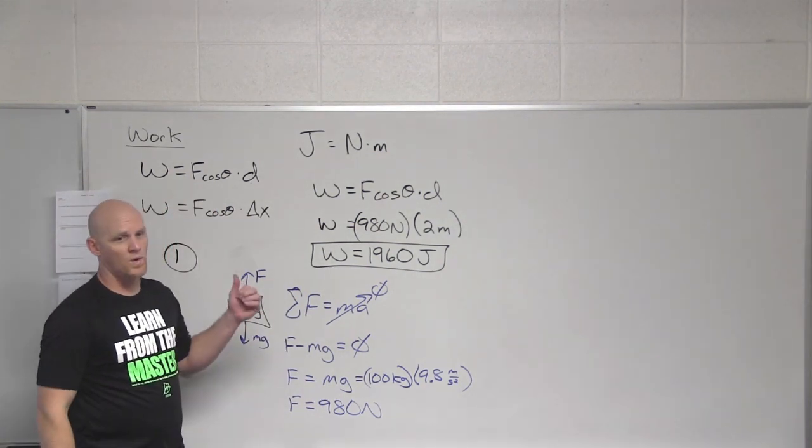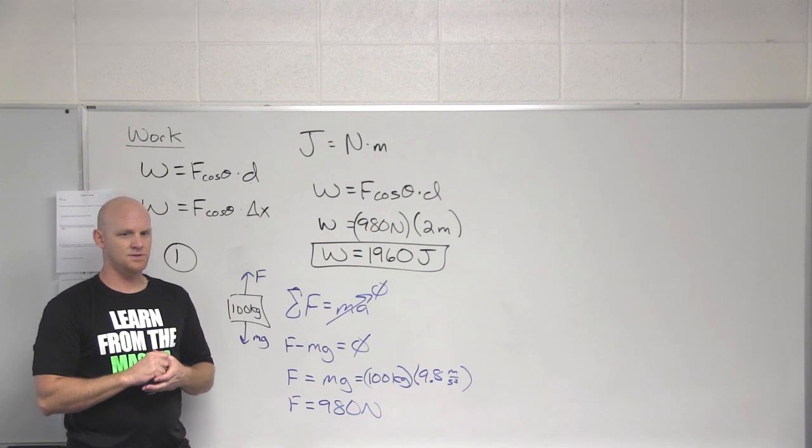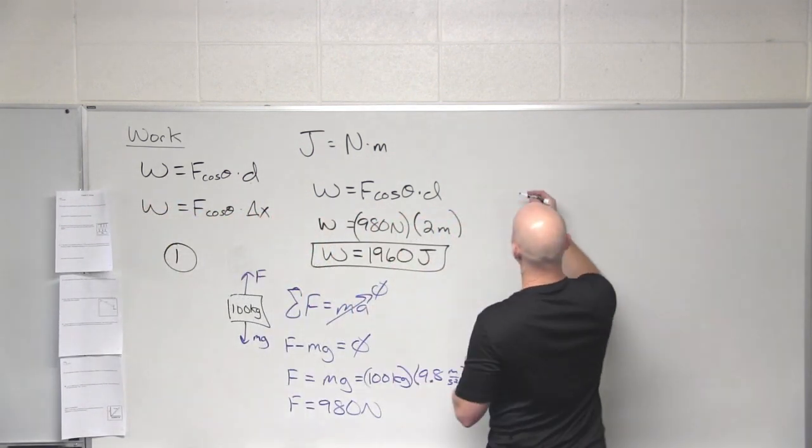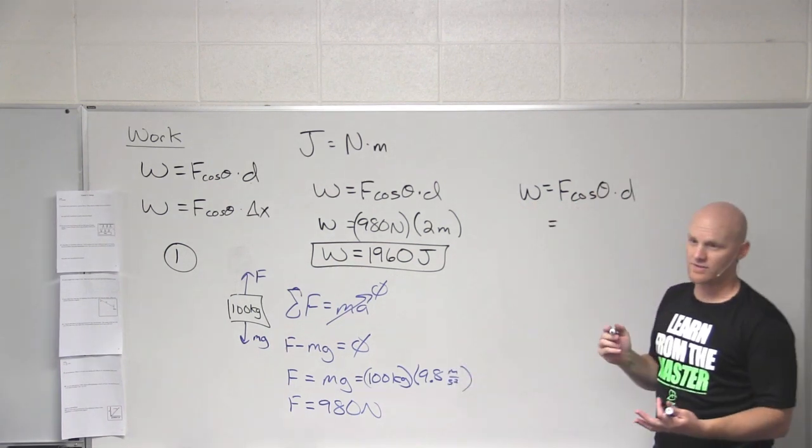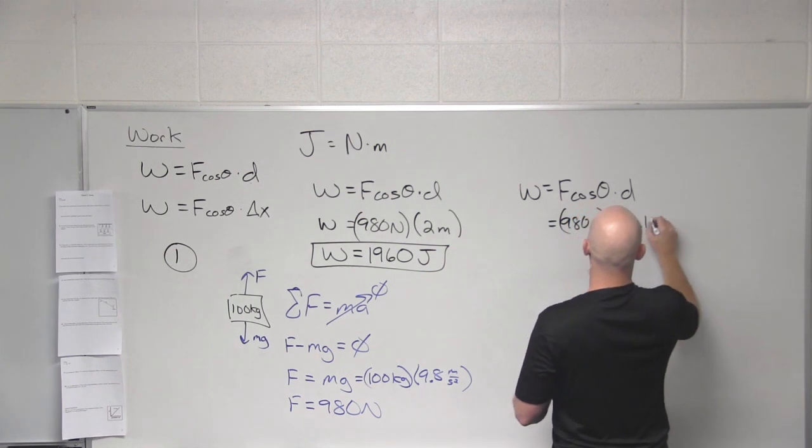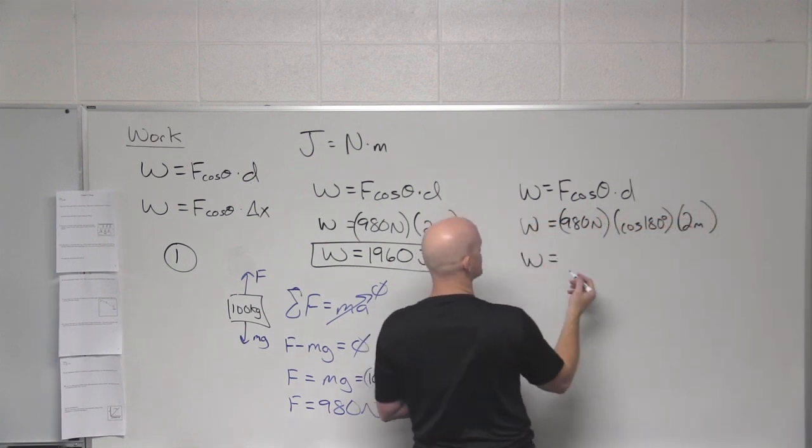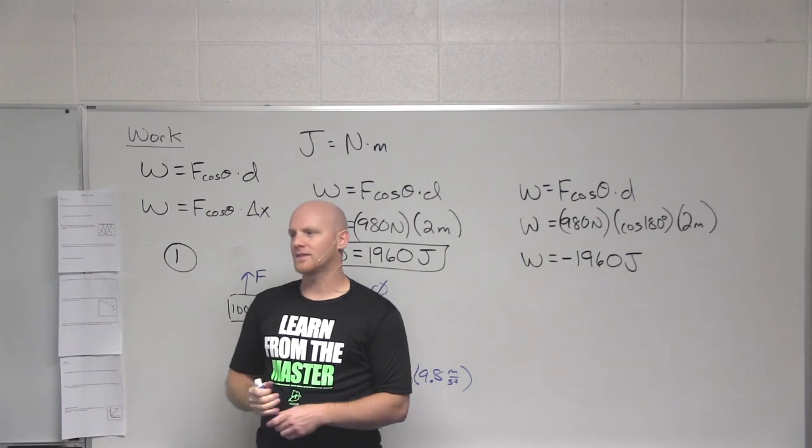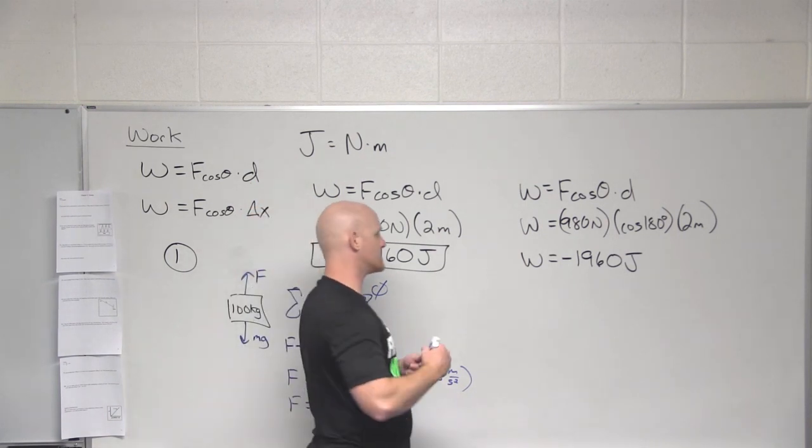So the other question here is what is the work performed by gravity during this same lifting? So what's going to be different here? The cosine of 180. So in this case, work equals F cosine theta times displacement. And in this case, what is the force due to gravity? Well, it's still 980 newtons. But in this case, we're going to do cosine of 180 degrees, which is negative one, and our displacement of two meters. And in this case, what's our work going to come out to? Negative 1960 joules. Totally makes sense because gravity points down, our displacement points up, and that's when you get negative work.